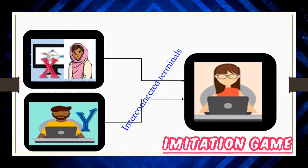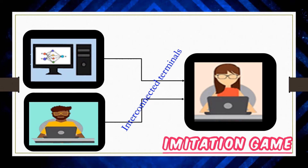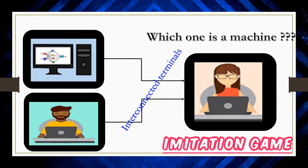When we discuss the Turing test as it is understood in the real world today, the interrogator is connected with one person and one machine through computer terminals. The interrogator's duty is to find out which of the two is a machine. If the machine is successful in convincing the interrogator that it is not a machine but rather a human being, then the machine can be declared as artificially intelligent. This is how Alan Turing's imitation game works in the real world.